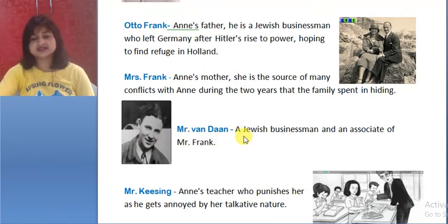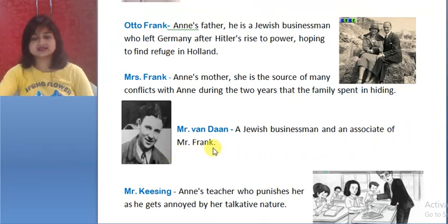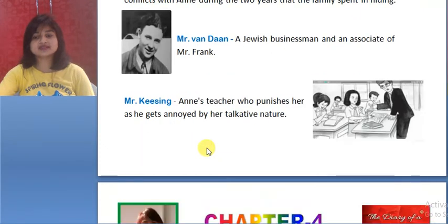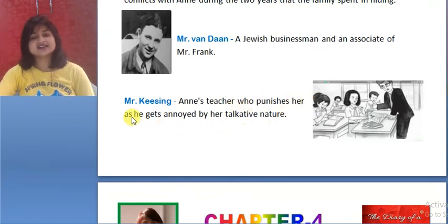Next character: Mr. Van Dine — a Jewish businessman and an associate of Mr. Frank. Next character: Mr. Kissing — Anne's teacher who punishes her because he gets annoyed by her talkative nature.